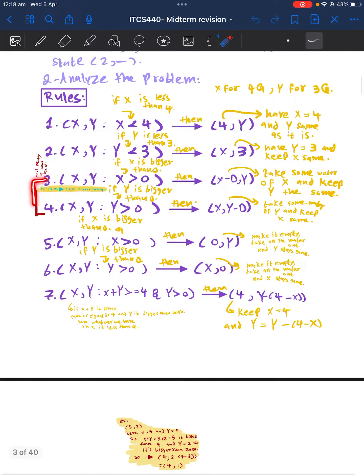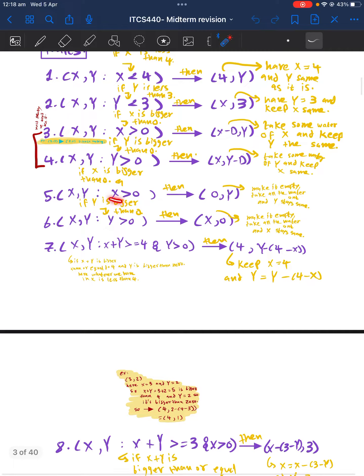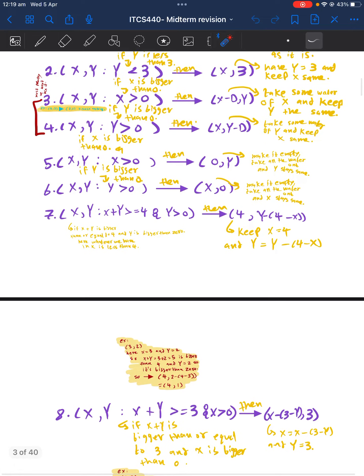Rule number five says if X is bigger than zero, so if X is not empty, then I will empty it. I will set it as zero and we will keep the Y the same. We will do the same thing with the Y. We will keep the X and we will set the Y to zero.